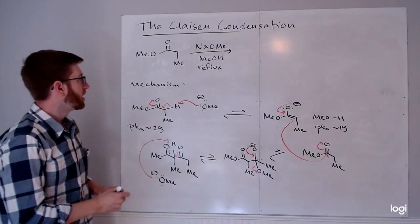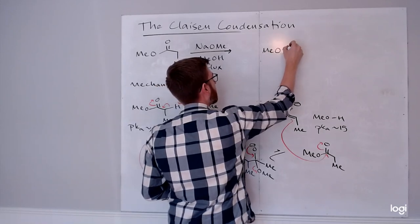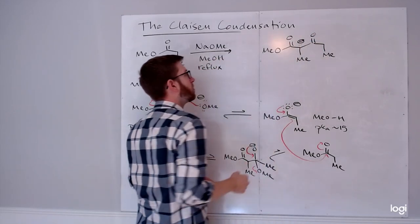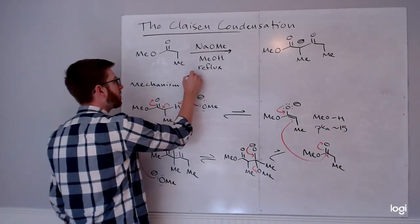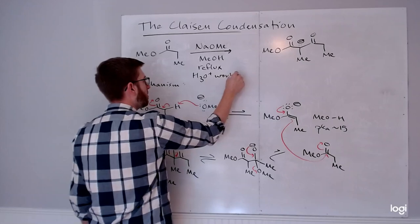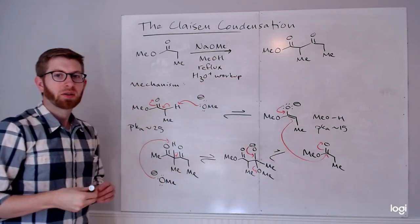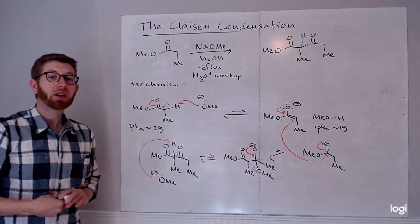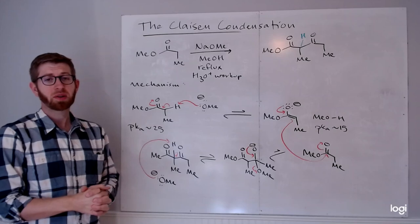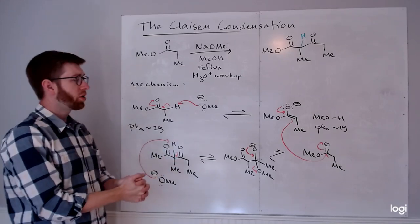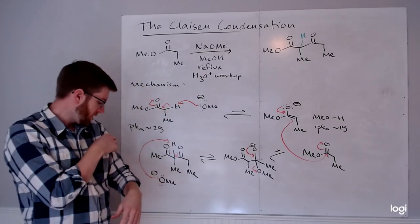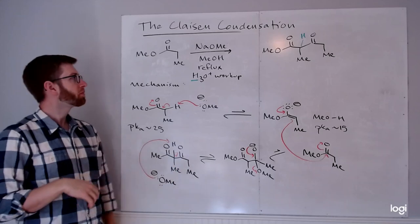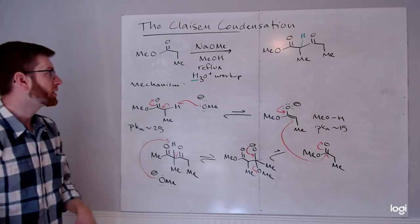The final product in principle should look like an anion - we can't really isolate that - so we also use the acidic water workup, H3O+, to put the proton back on. The Claisen condensation thus looks a lot like what we've been doing, but done with a reversible deprotonation rather than an irreversible one. In that way it's similar to how aldol reactions can be done either by pre-forming enolates or using weaker bases with an unfavorable deprotonation step.